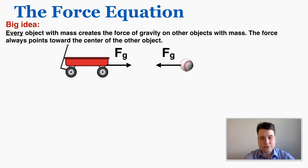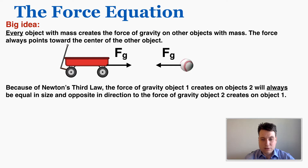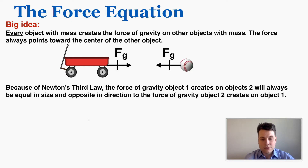This is counterintuitive because we don't ever see the effects of this force of gravity. The reason is that the force of gravity everyday objects put on each other is incredibly small, but it is still present. Because of Newton's third law, the force object 1 creates on object 2 will always be equal in size and opposite in direction to the force object 2 creates on object 1, regardless of the size of the individual objects.